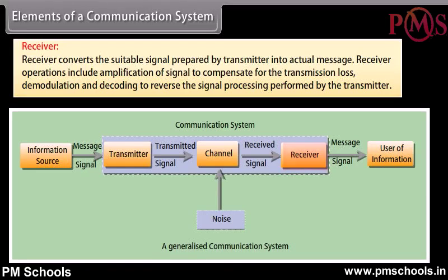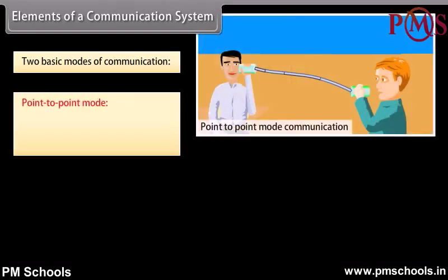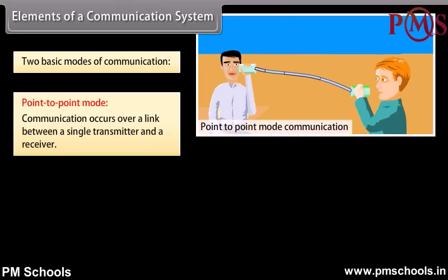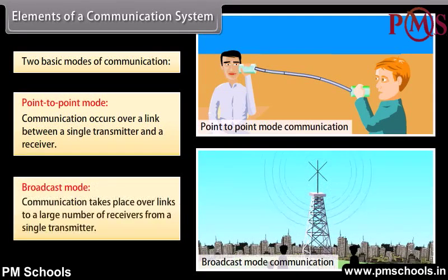Receiver: The receiver converts the suitable signal prepared by the transmitter into the actual message. Receiver operations include amplification of the signal to compensate for transmission loss, demodulation, and decoding to reverse the signal processing performed by the transmitter. Two basic modes of communication: Point-to-point mode occurs over a link between a single transmitter and a receiver. Broadcast mode takes place over links from a single transmitter to a large number of receivers.